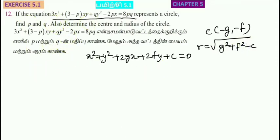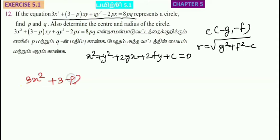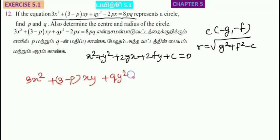The equation is given as: 3x squared plus 3 minus p into xy plus q times y squared minus 2px.